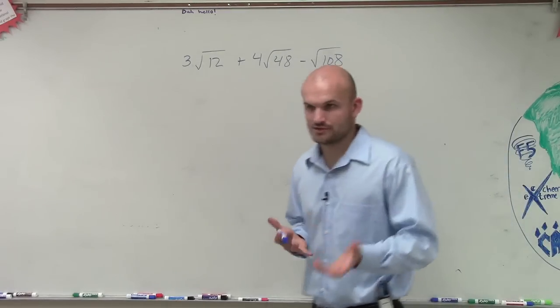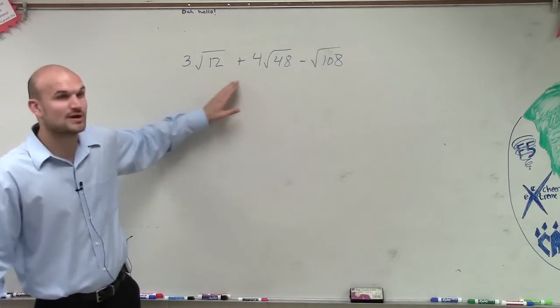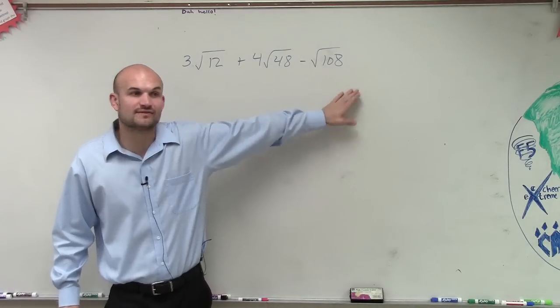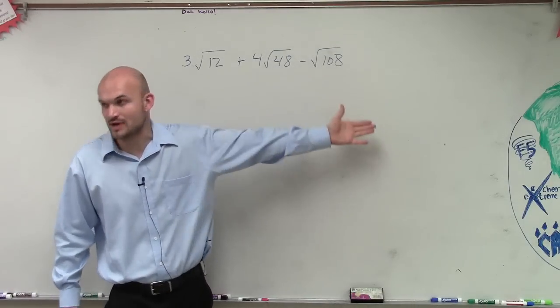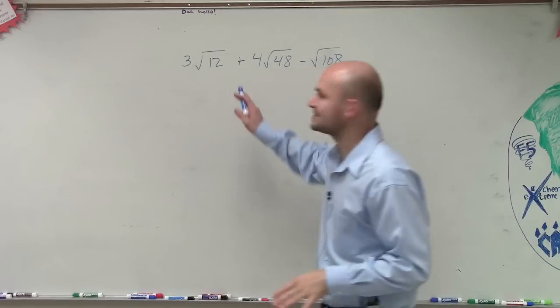I'm not going to go through the whole spiel again on how to simplify, but what we notice is each one of these we cannot add or subtract them unless they are exactly the same. Unless I'm taking the square root of exactly the same number, I cannot add or subtract these. So what I want to do is simplify them.